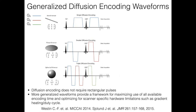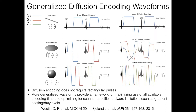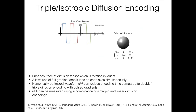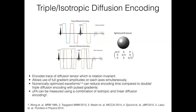Other groups very cleverly realized and proposed more generalized diffusion encoding waveforms. Rather than sticking to rectangular pulses, generalized waveforms provide a framework for maximizing all available encoding time and an opportunity to optimize for scanner-specific hardware limitations such as gradient heating and duty cycle. This is particularly beneficial for triple diffusion encoding — you can play all three axes simultaneously, dramatically reducing the echo time or allowing higher B values.